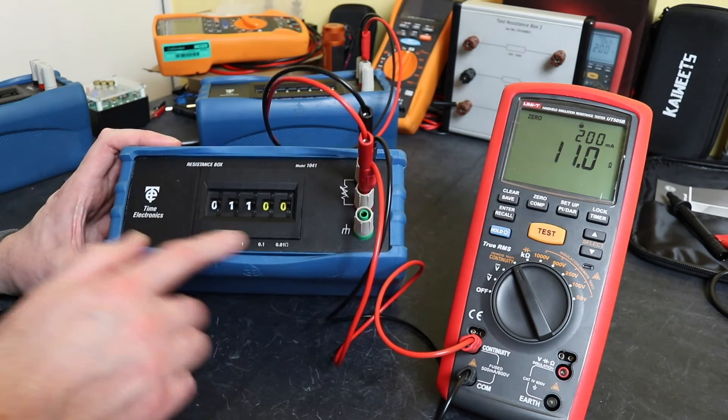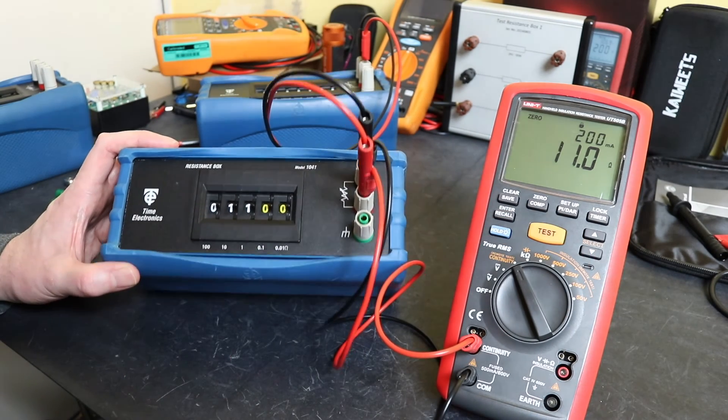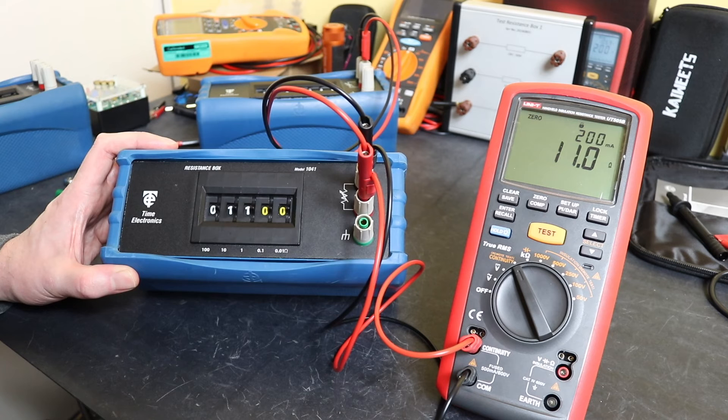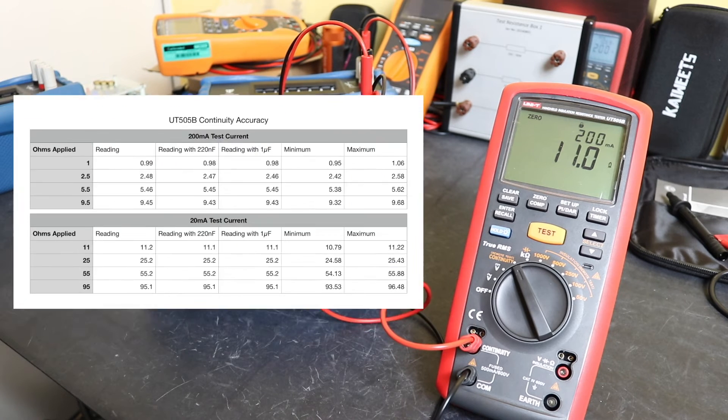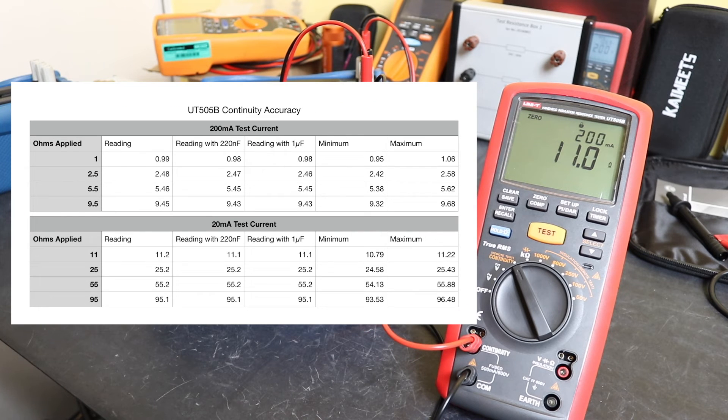Just put up this results table here. You see the 200 milliamp tests are in the top four, and then the 20 milliamp tests are in the bottom four sets of readings. You can see the expected value that I'm putting in there in the first column, and then the next column there, that's the reading I took without any capacitance putting power to the resistance, and then the column with the 220 nanofarad capacitance in parallel, and then the one microfarad in parallel.